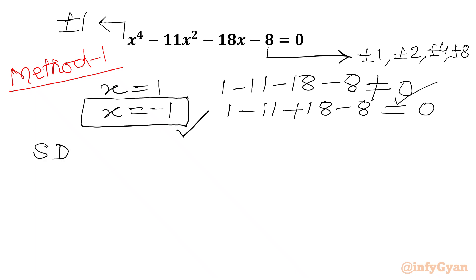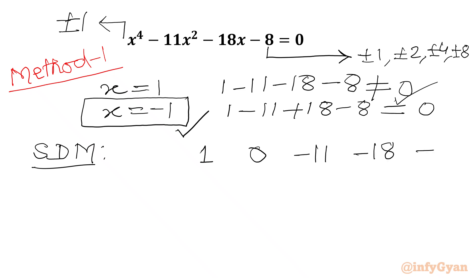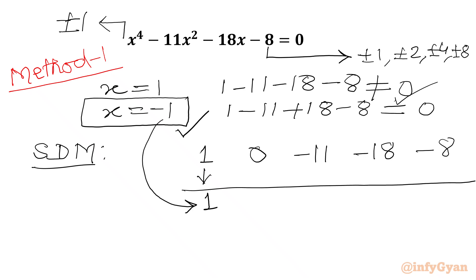Now we will use synthetic division method. We need to write all the coefficients of the quartic equation. Coefficient of x⁴ is 1, coefficient of x³ is missing so 0, coefficient of x² is -11, coefficient of x is -18, and constant is -8. Now we write our leading coefficient 1 as it is, then multiply the base solution with this leading coefficient: -1 times 1 is -1.